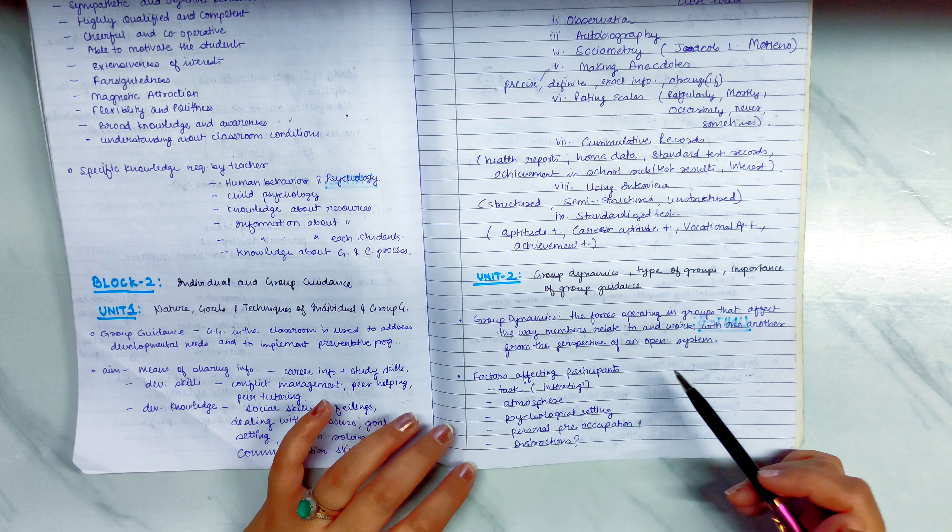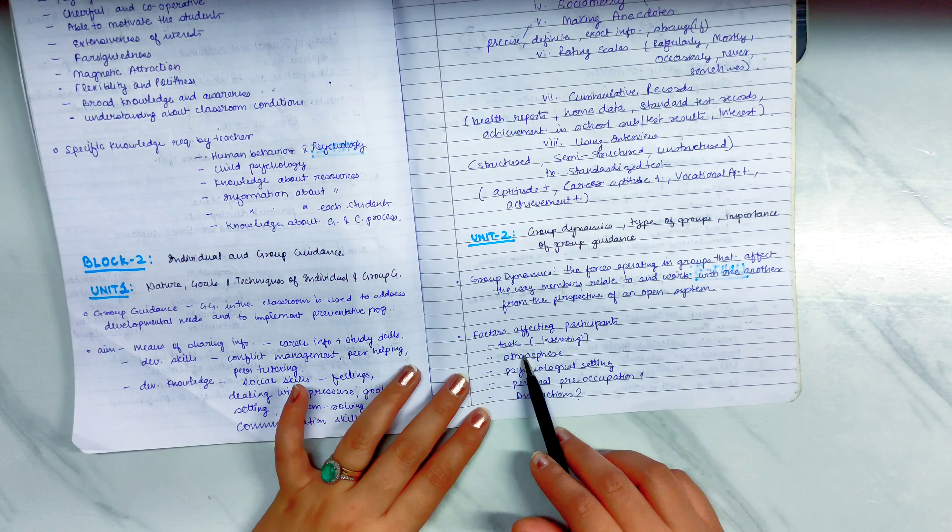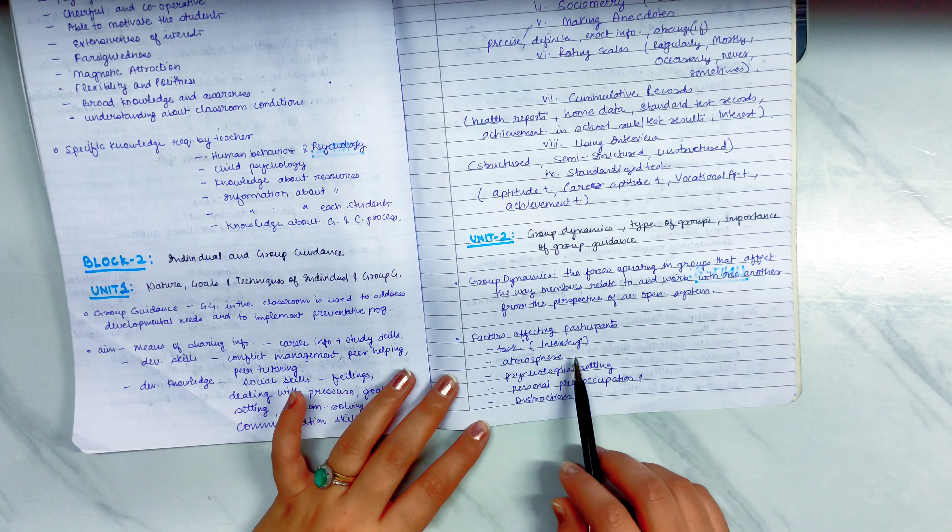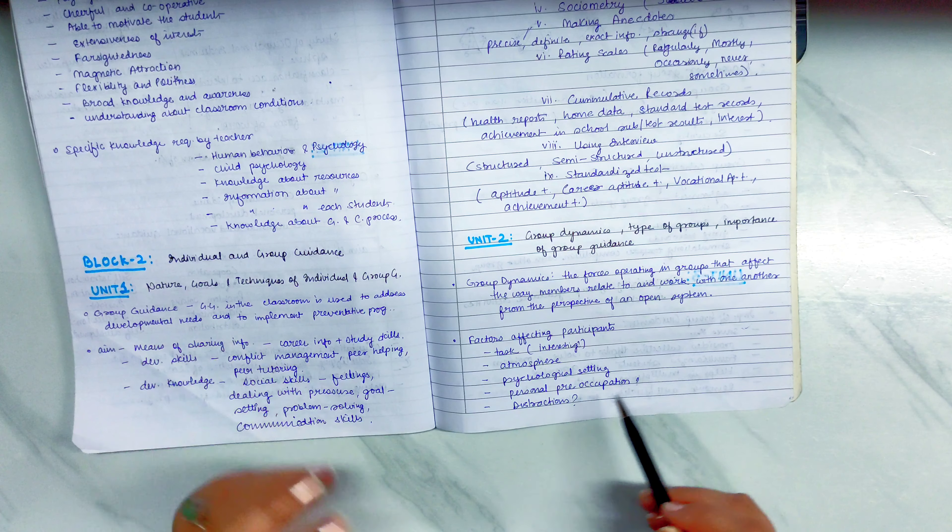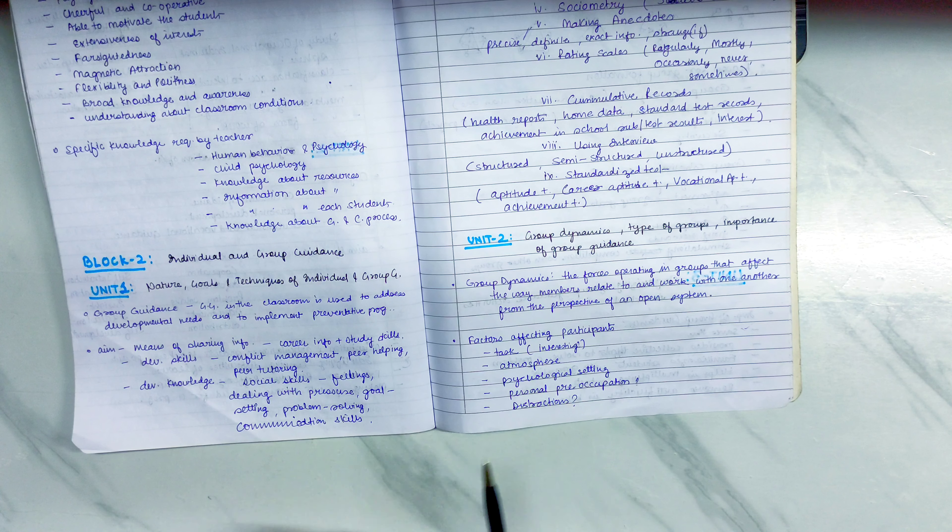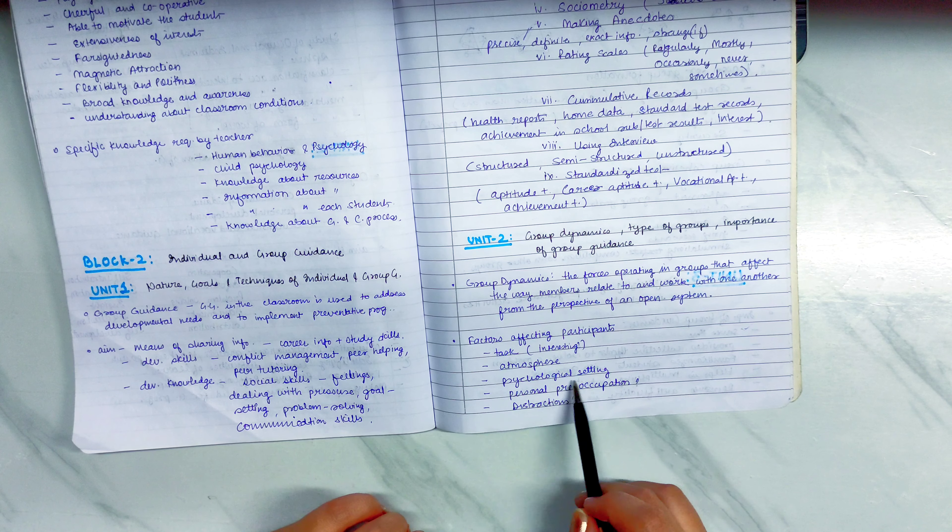Then, Factors Affecting Participants. So, what are the factors of one group? The shared tasks. If it's interesting, it means that it's good. It is good for them. It is also important to work on the atmosphere. Atmosphere is a good atmosphere, it is also a psychological setting.